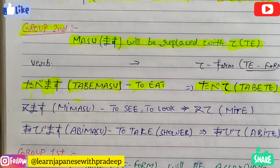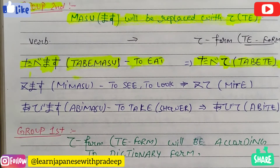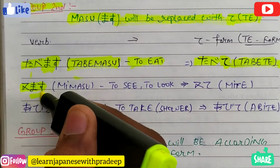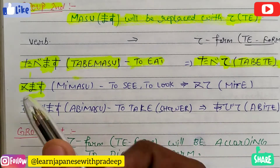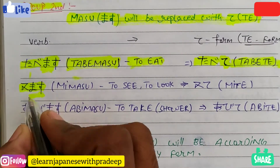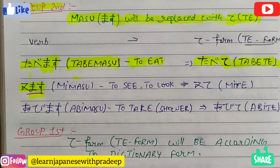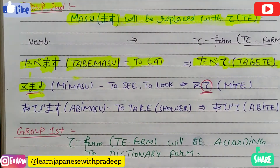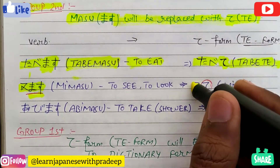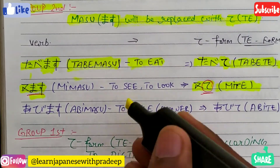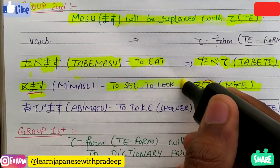The next example is mimasu. This masu would be replaced with te, so it would be pronounced as mite in te form. Mimasu means 'to see' or 'to look'.